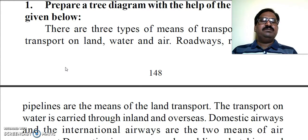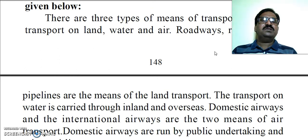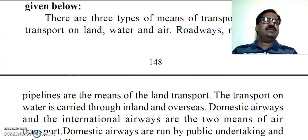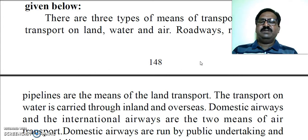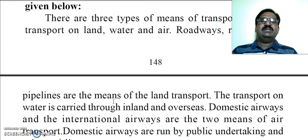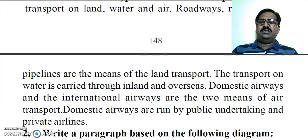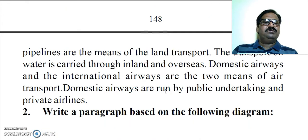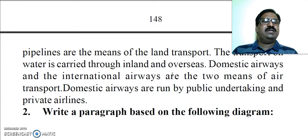Here is an example from which you can draw a line graph. There are three types of means of transport: transport on land, water, and air — that is roadways, railways, waterways and airways. This information can also be shown in a tree diagram, where transport is classified as land, water, and air. The transport on water is carried through inland and overseas routes, while airways are divided into domestic and international.